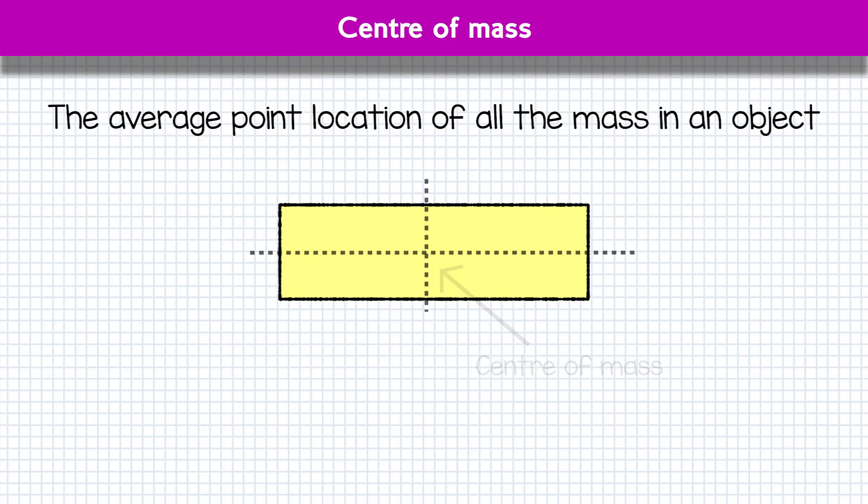But if that block was half plastic, half lead, then the centre of mass would be way towards the lead end of the block, as the lead part has more mass. Therefore, on average, the mass of the block would be much more towards the lead end, away from the centre. And that's what centre of mass means.